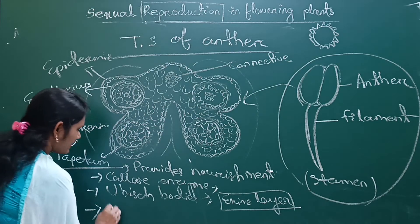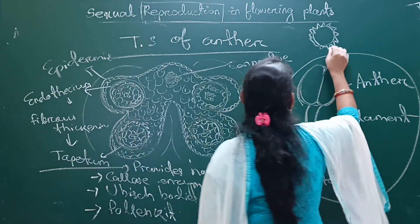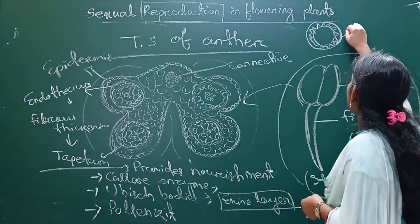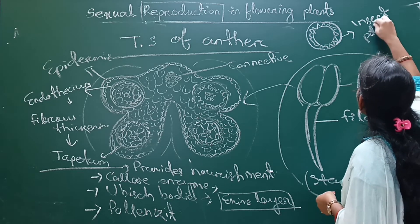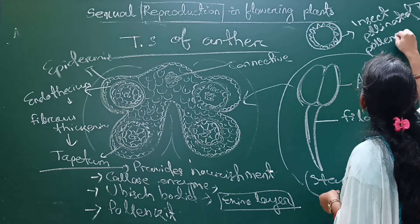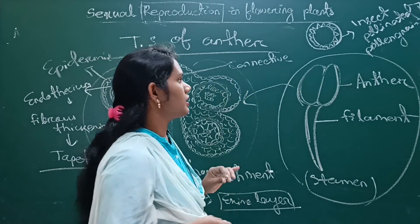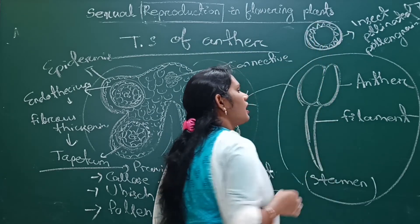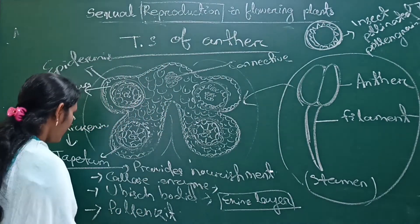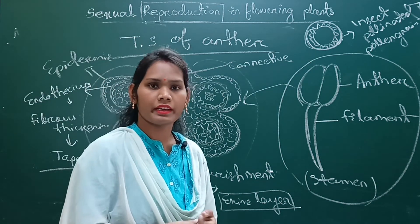The tapetum also secretes pollen kit, which is the outer extra layer found on insect-pollinated pollen grains, giving extra protection to the pollen grain. Additionally, tapetum secretes some proteins which help in recognizing the compatibility of pollen grain by the stigma.